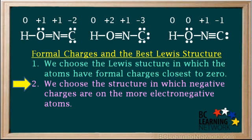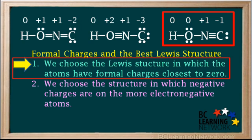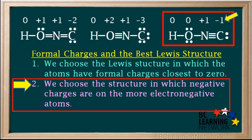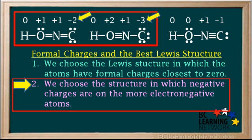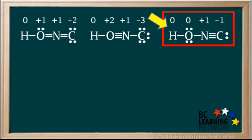Secondly, we choose the structure in which negative charges are generally on the more electronegative atoms. Following guideline one, structure three has formal charges closest to zero, so it would be the most favorable Lewis structure. It doesn't follow guideline two because carbon, which has the negative charge, is actually less electronegative, with an electronegativity of 2.5, than nitrogen, with an electronegativity of 3. However, if you look at structures one and two, carbon's charge is actually more negative than it was in structure three, so these violate guideline two even more than structure three does. So structure three is still our best choice.